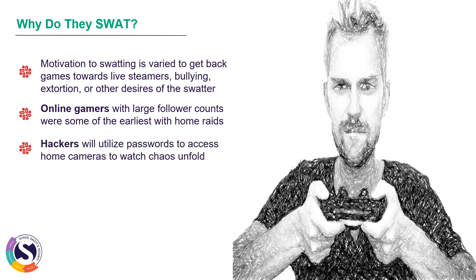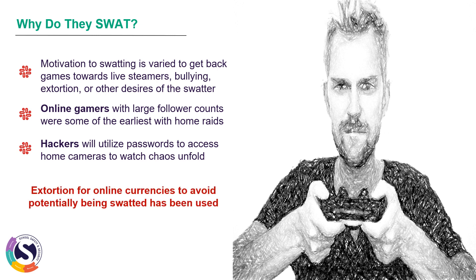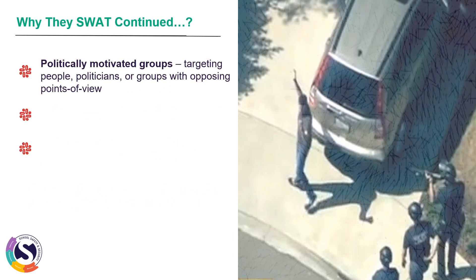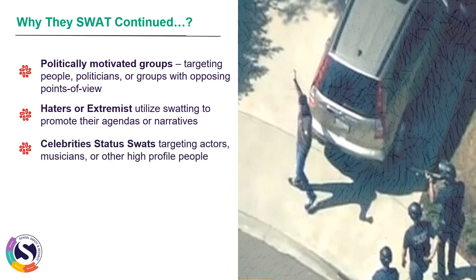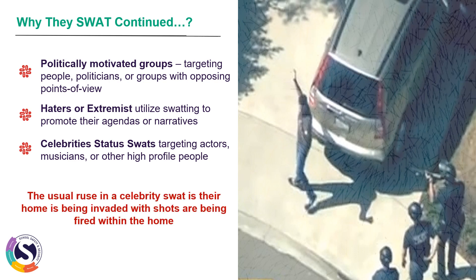Hackers also used accessed passwords to view home cameras and watch the chaos unfold. Extortion for online currency is another motivation. There are also political motivations — targeting politicians and groups with opposing views. Haters and extremists use swatting to promote their agendas. Early on, celebrities were frequently targeted; in the picture shown, that's Ashton Kutcher being swatted outside his own home. The typical celebrity swat ruse involves reports of a home invasion with shots fired.